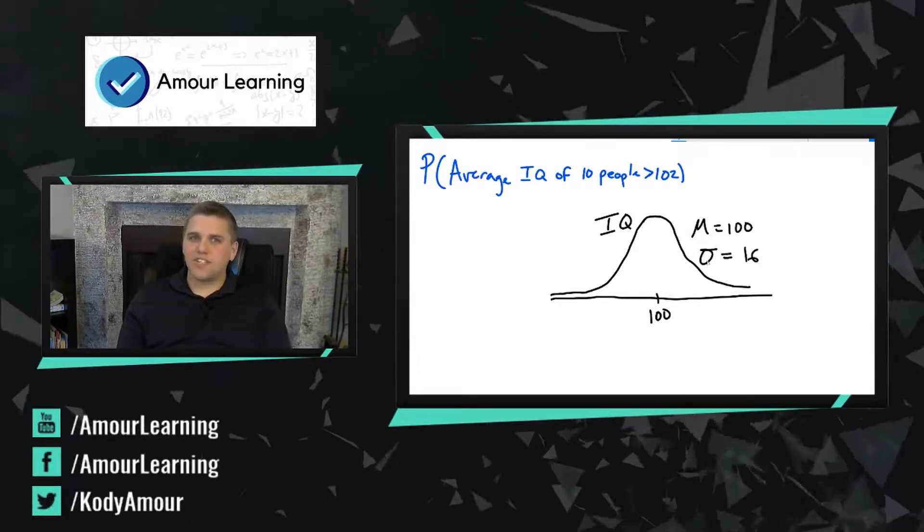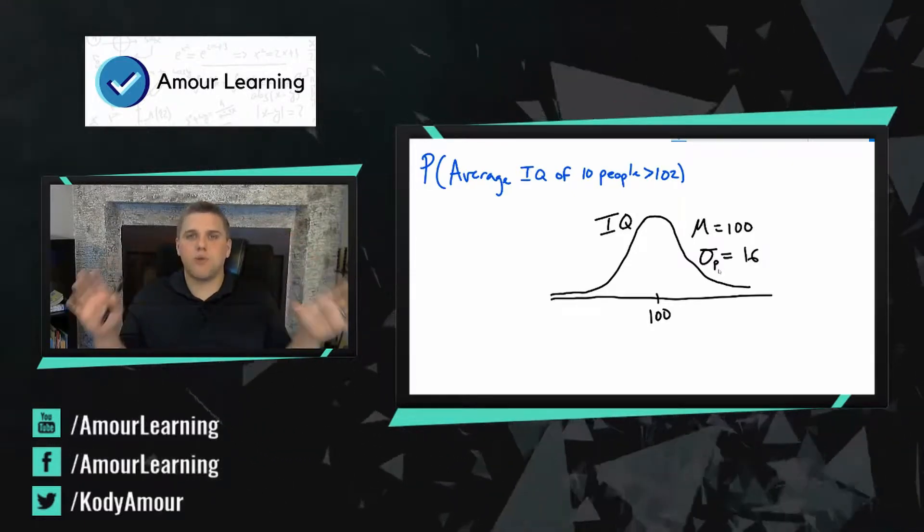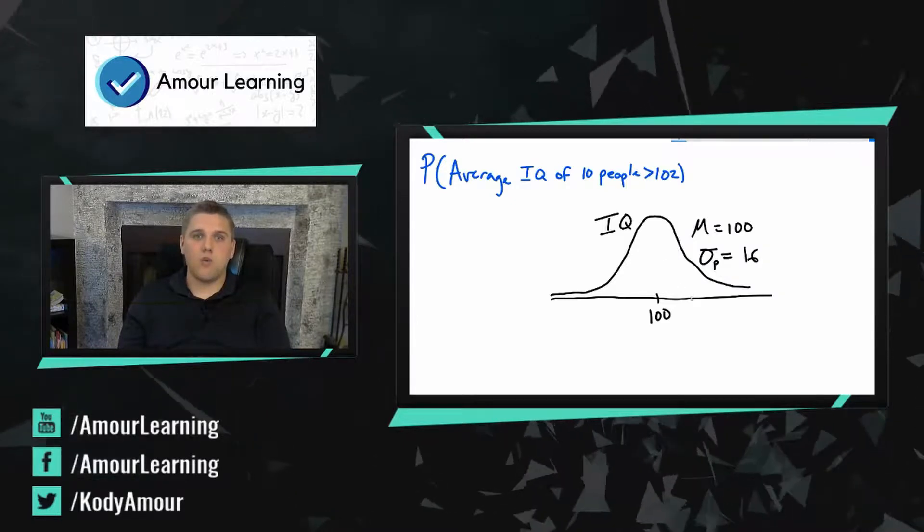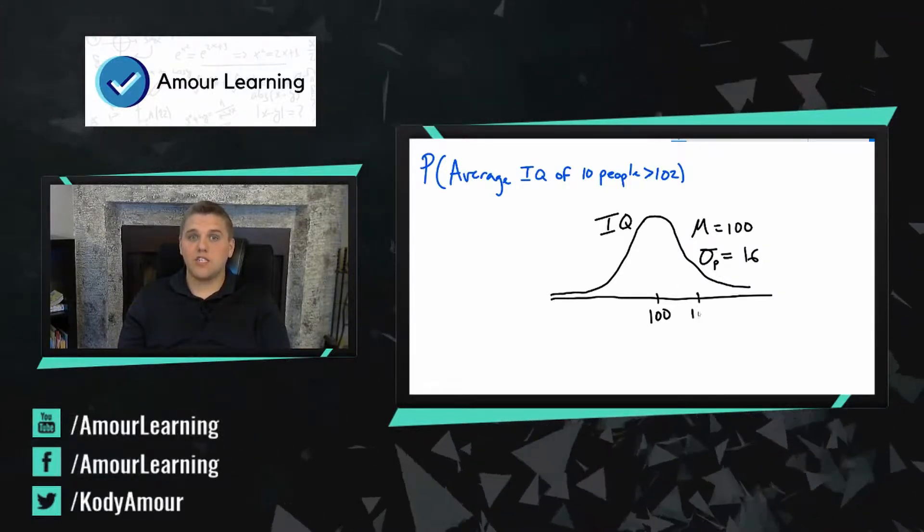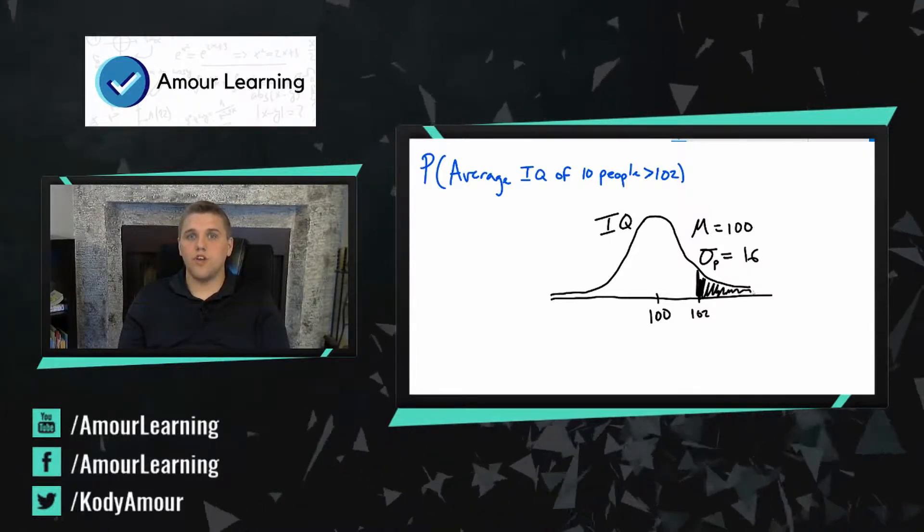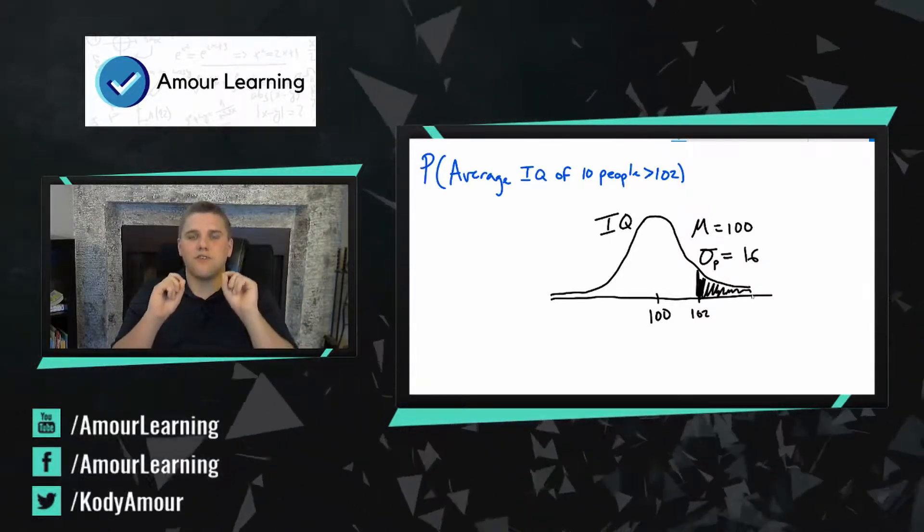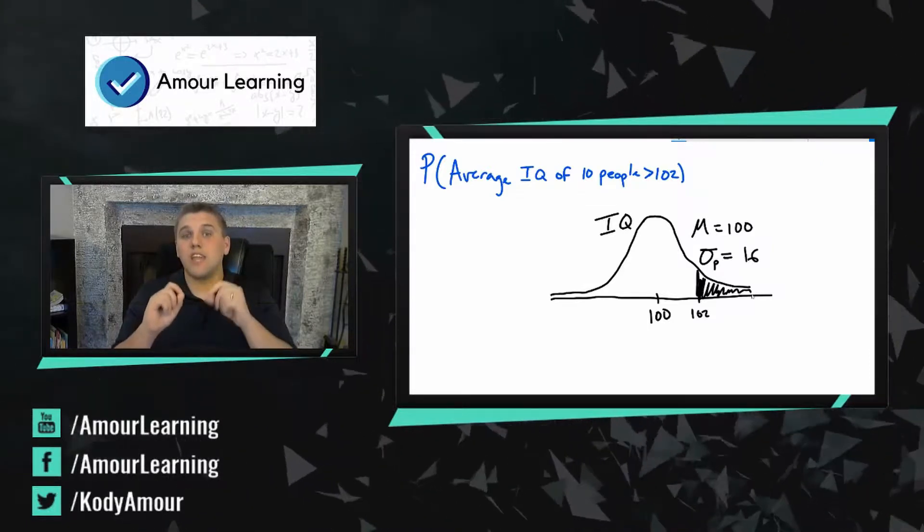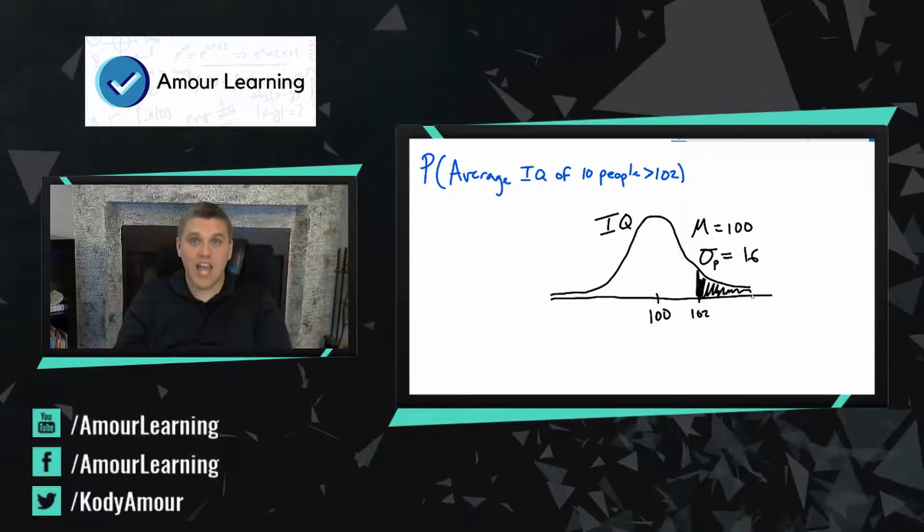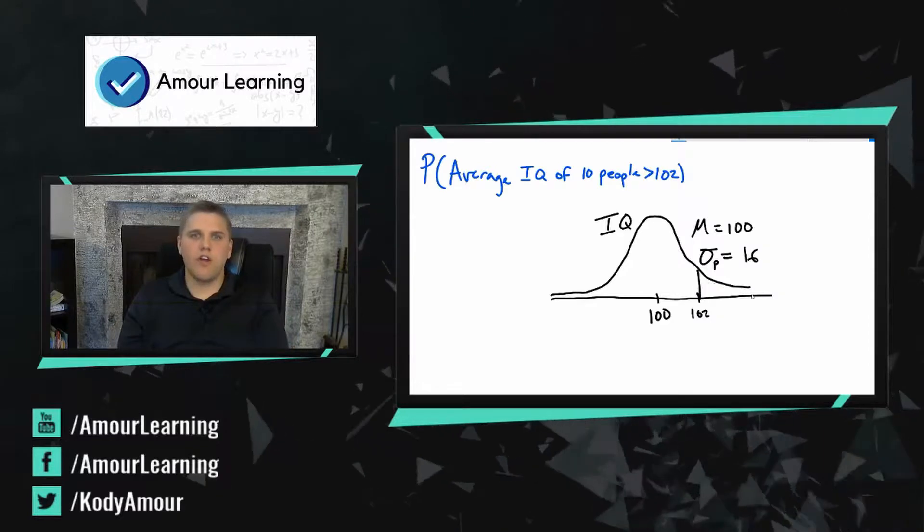Now keep in mind the standard deviation is the population standard deviation, meaning that the population is spread out. People have different IQ scores and we know how to find the probability that someone has an IQ greater than 102. We know how to do that, but we're not asking to find the probability that someone's IQ is greater than 102.